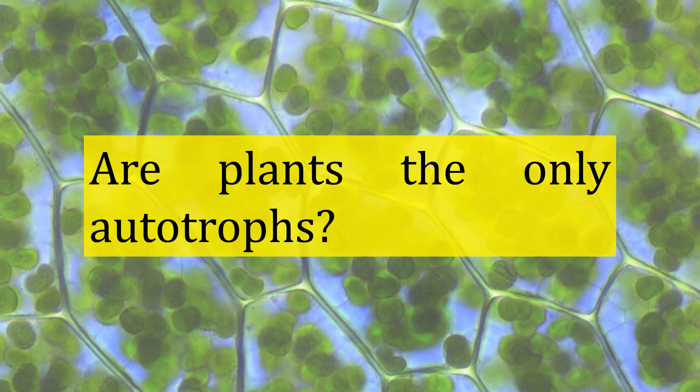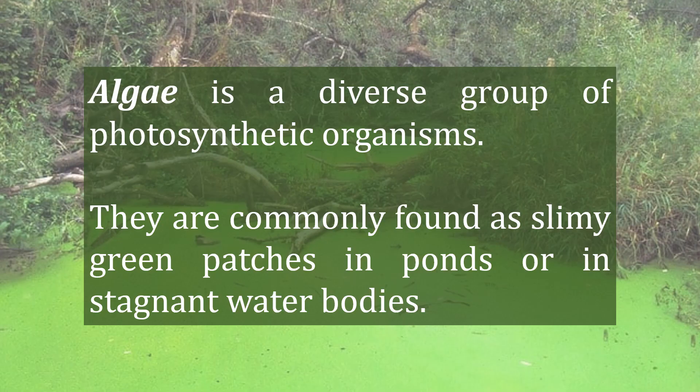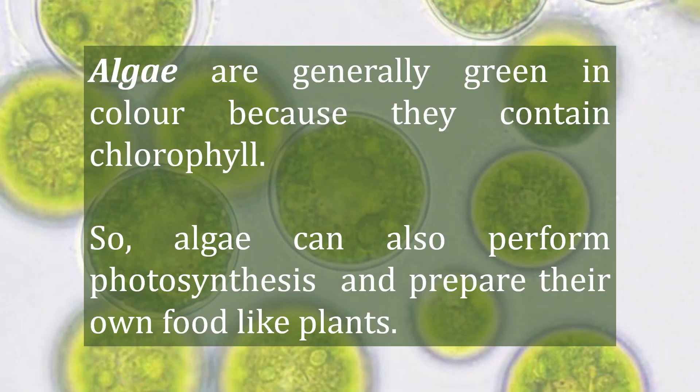Are plants the only autotropes? Algae is a diverse group of photosynthetic organisms. They are commonly found as slimy green patches in ponds or in stagnant water bodies. Algae are generally green in color because they contain chlorophyll, so algae can also perform photosynthesis and prepare their own food like plants.